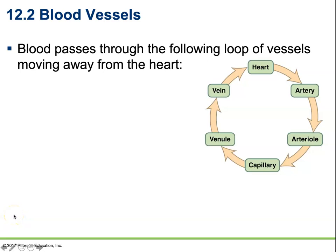Next we're going to talk about the passage of blood through blood vessels. Blood is going to pass through the following loop of vessels when moving away from the heart. Starting at the heart, we move into arteries, then branch into smaller arterioles, and then branch into capillaries.